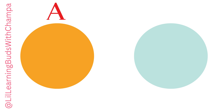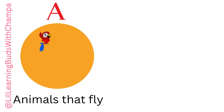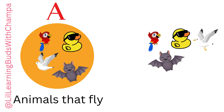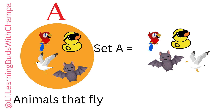Let's learn with a very simple example. Let's take two circles — Circle A — and fill it with all the animals that fly. For example: Parrot, Duck, Seagull, Bat. So this group is called Group A or Set A.